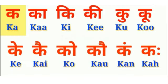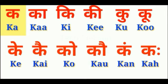Children, today what are the letters we have learned? First letter: Ka. Second letter: Kā. Third letter: Ki. Fourth letter: Kī. Fifth letter: Ku. Sixth letter: Kū. Seventh letter: Ke. Eighth letter: Ko. Ninth letter: Kai. Tenth letter: Kau. Eleventh letter: Kaṃ. Twelfth letter: Kaḥ.